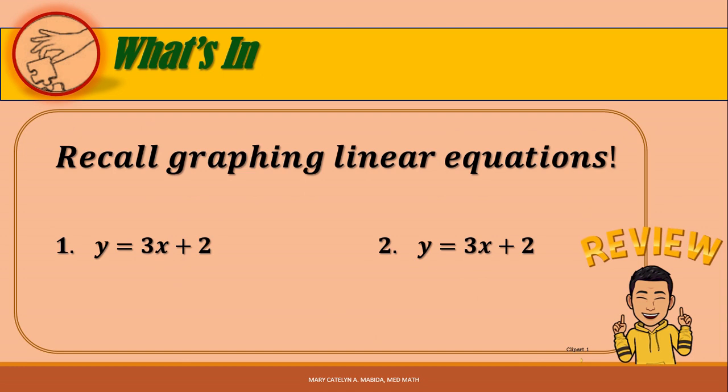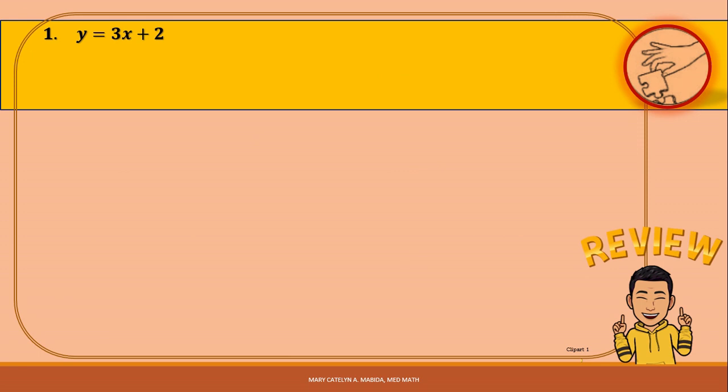Let us recall graphing linear equations in two variables. Let us draw the graph of each of the following linear equations in a Cartesian plane. Note that the equation is in the slope-intercept form. Therefore, we can graph this equation using its slope, which is 3, and y-intercept, which is 2.